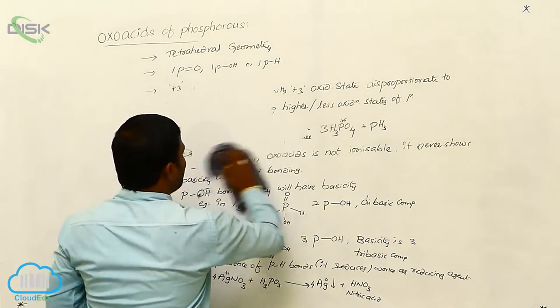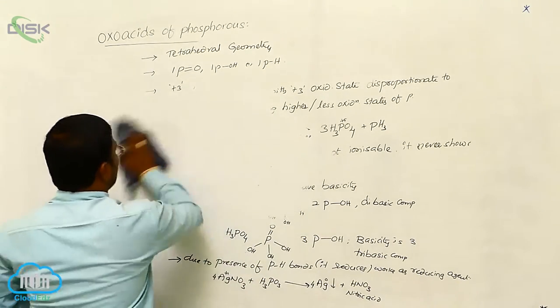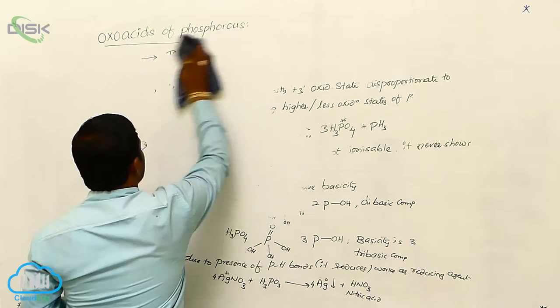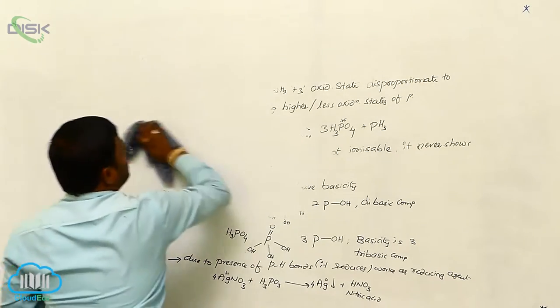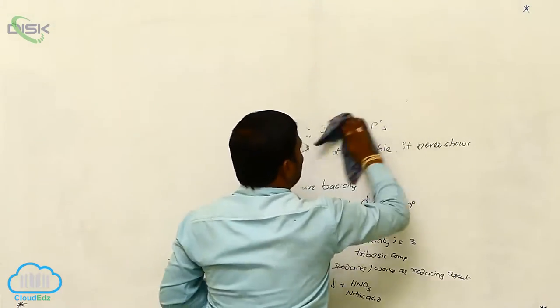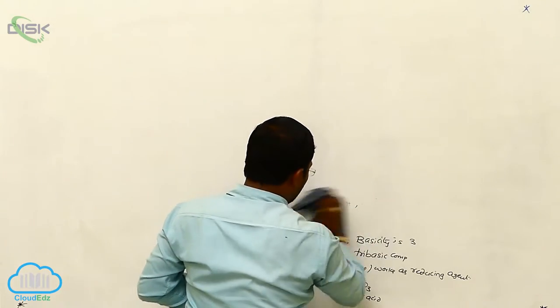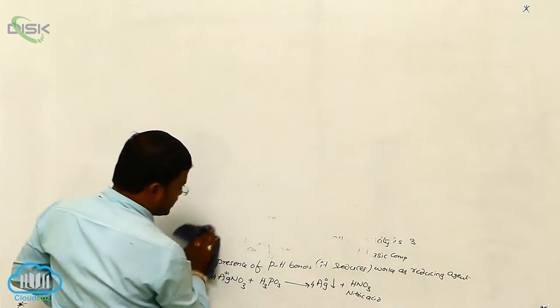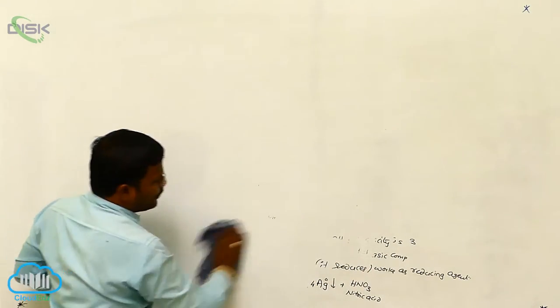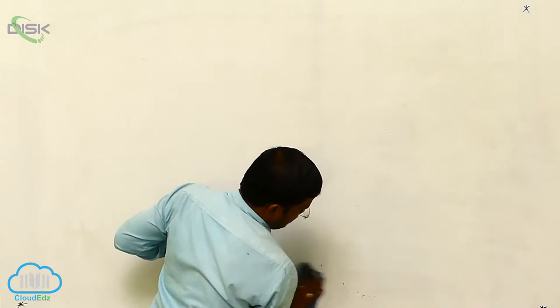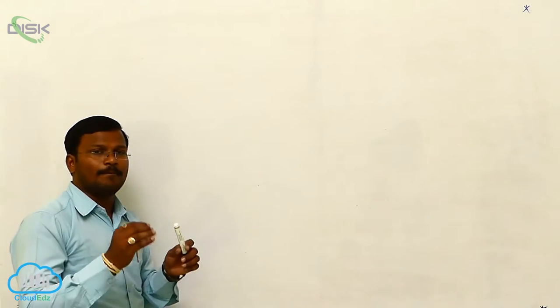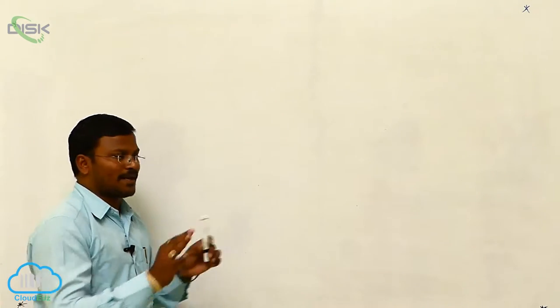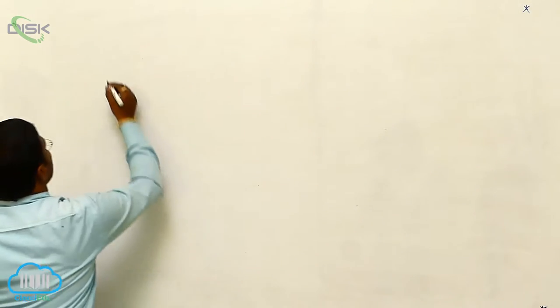Once again, there are 7 oxoacids resulting from phosphorus. They are hypophosphorus acid, orthophosphorus acid, pyrophosphorus acid, hypophosphoric acid, pyrophosphoric acid, orthophosphoric acid, and metaphosphoric acid.